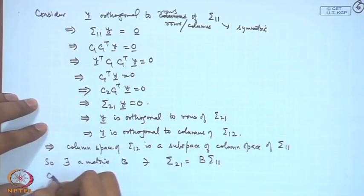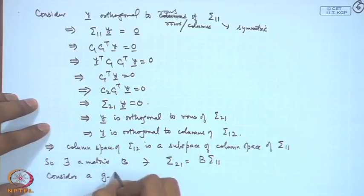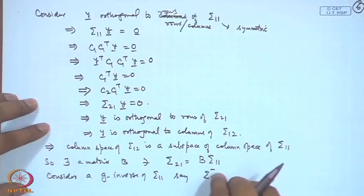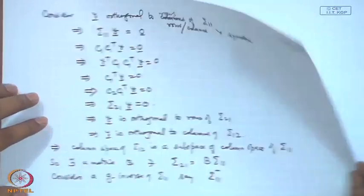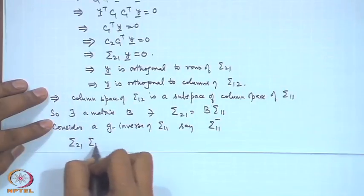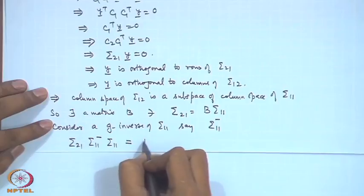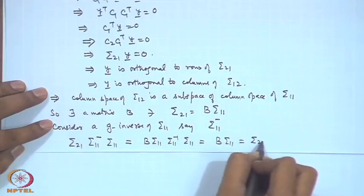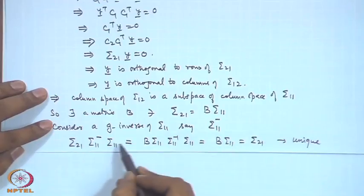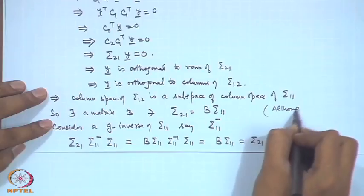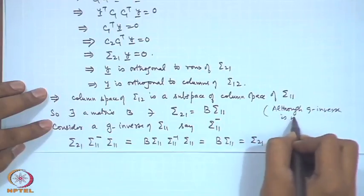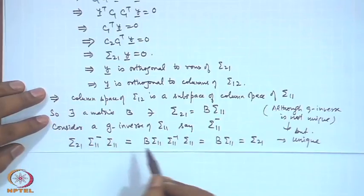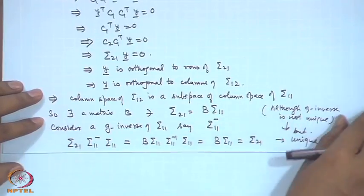Using a generalized inverse (G-inverse) of sigma_11, we can show: sigma_21 * sigma_11^(-) * sigma_11 = b*sigma_11*sigma_11^(-)*sigma_11 = b*sigma_11 = sigma_21. So although the G-inverse itself is not unique, the term sigma_21*sigma_11^(-)*sigma_11 is unique, and this unique quantity can be used in deriving the conditional distribution.